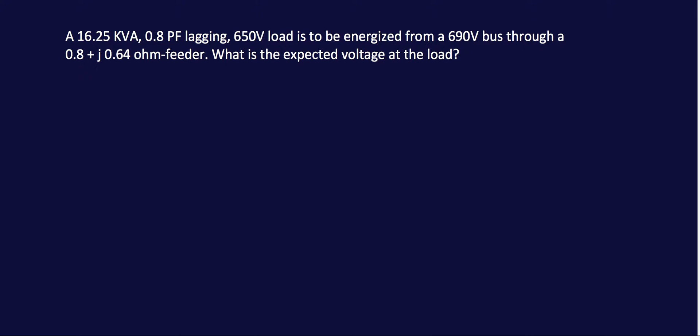So we have a source, it's 690 volts. Let's draw it. We have a feeder, 0.8 plus j0.64 ohms, so let's just represent it here.